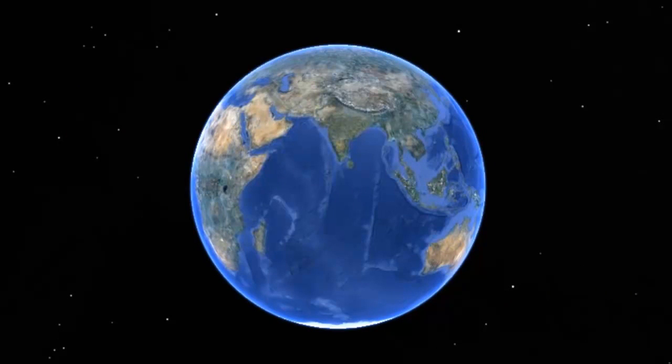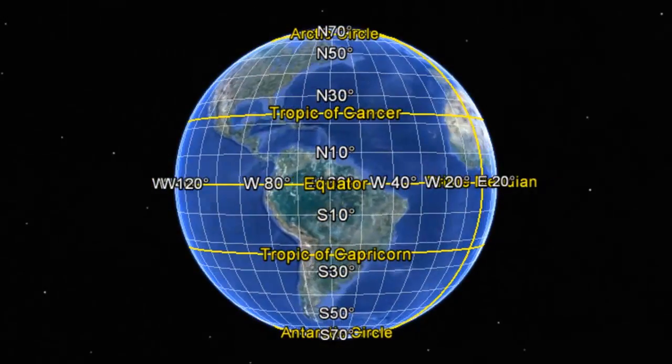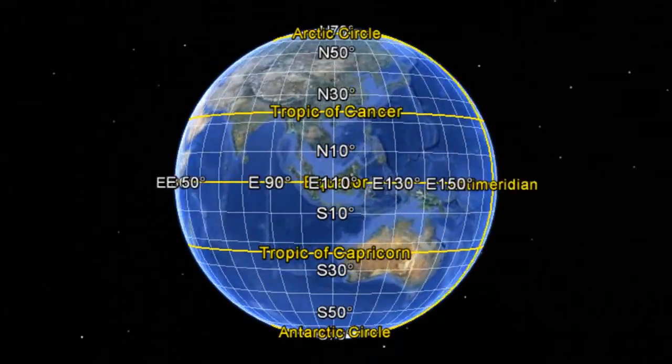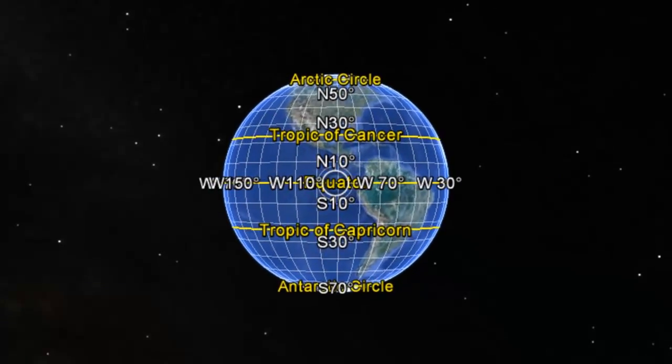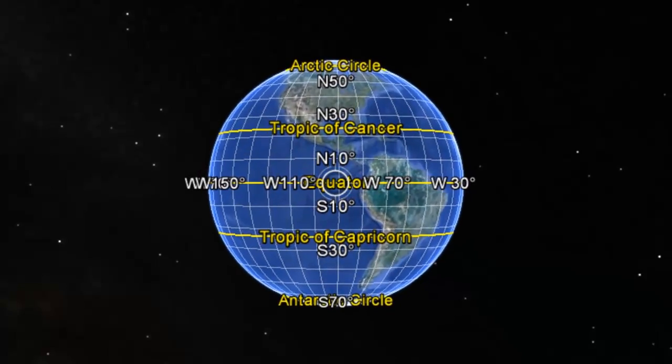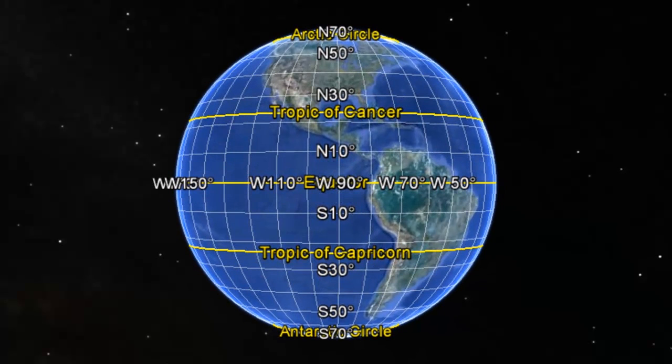Geostationary satellites have an Achilles heel though. No matter which spot in the geostationary orbit we plant ourselves, we'll still be orbiting above the equator. From where we are, the high latitude regions are always hidden behind the curvature of the Earth. A geostationary satellite can never provide coverage for the polar regions.